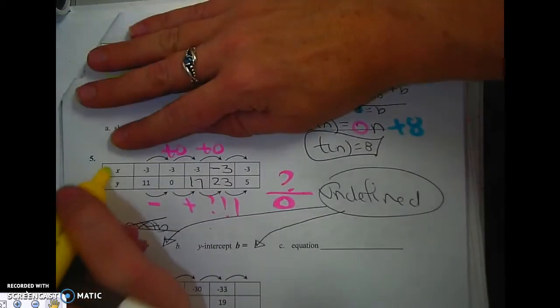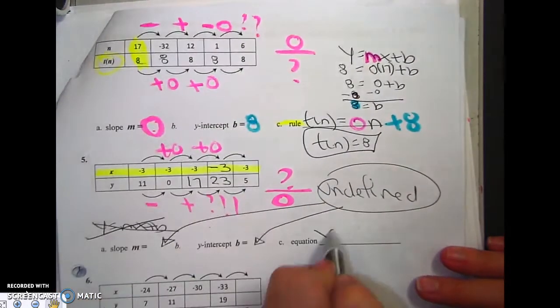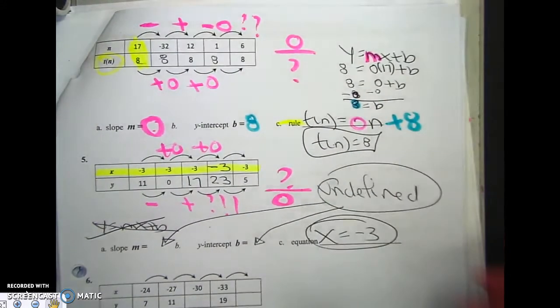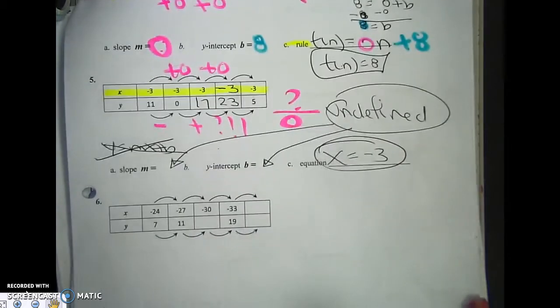That means what I've got to do is do my own rule. What does x equal? Negative 3. Okay?